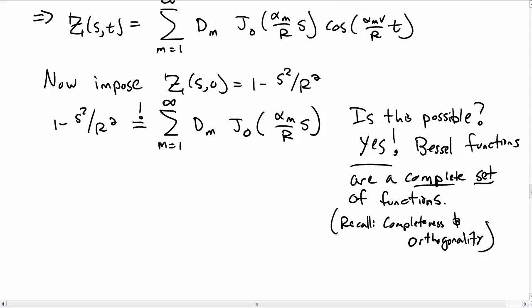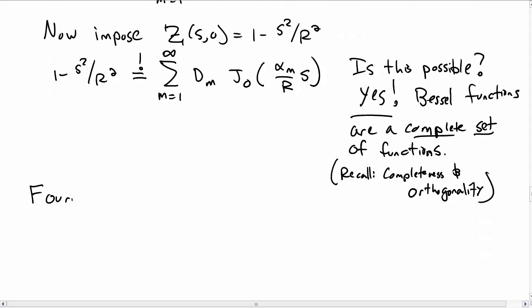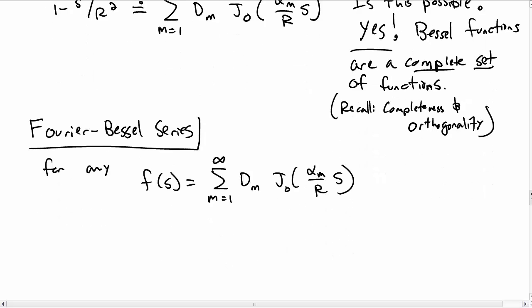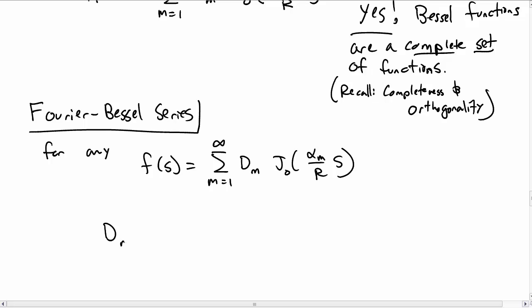And so the way we do this is with a Fourier type series. In fact, we're going to call it a Fourier Bessel series. Namely, let's say in general, for any function f of s, at least a sufficiently well-behaved function f of s, you can write that as a sum from m equal to 1 to infinity of some coefficients times j 0 of alpha m over r times s.